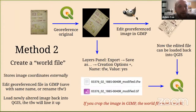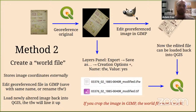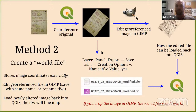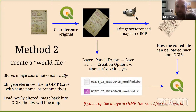Method two is creating a world file — potentially a better approach. In this method, you store the coordinates externally rather than embedded in the georeferenced image. You export a world file once you've georeferenced the layer, and that world file sits alongside your georeferenced TIFF. You can then change the image as much as you want in GIMP, and when you load it back into QGIS, it will show up in the correct place.